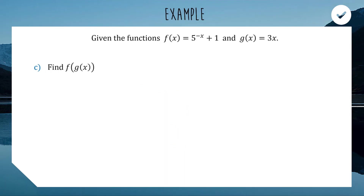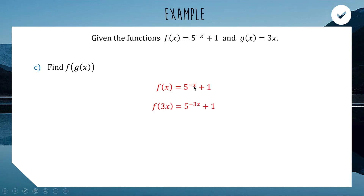For the next part, we find f of g of x. We take the exponential function f of x and change the input from x to g of x, which is 3x. So f of 3x simply changes the power of the 5 from negative x to negative 3x. That's all — just substituting one function into the other.